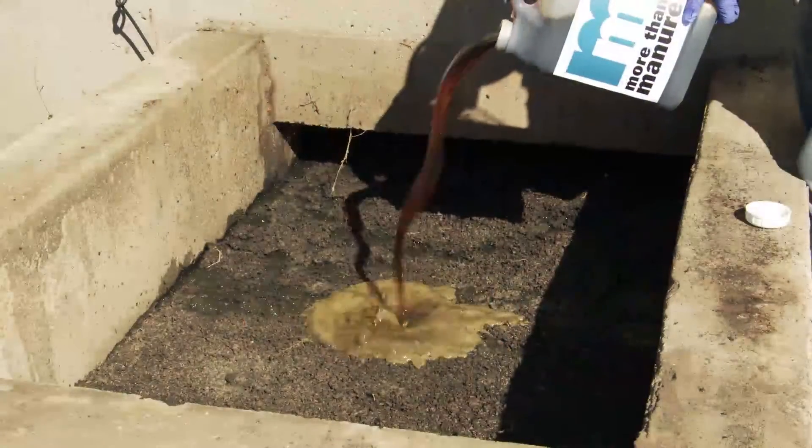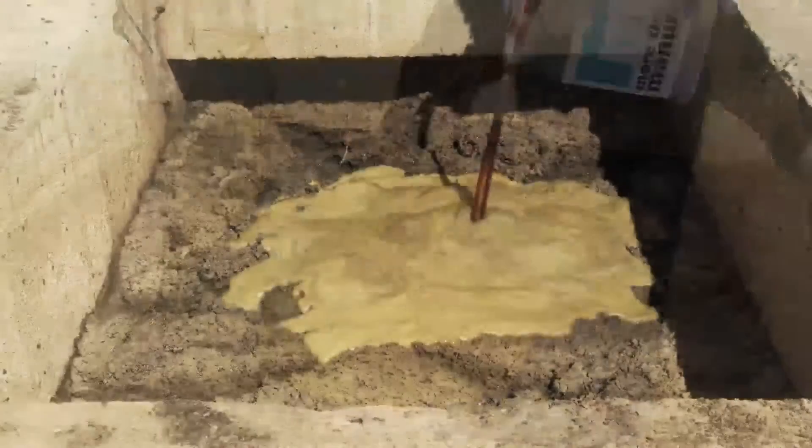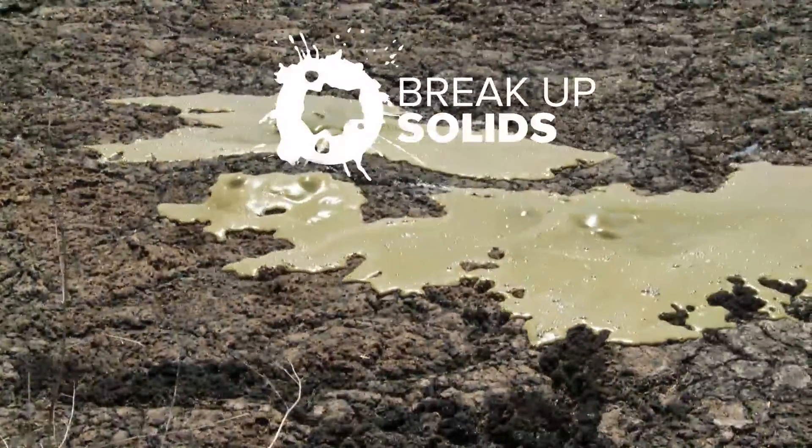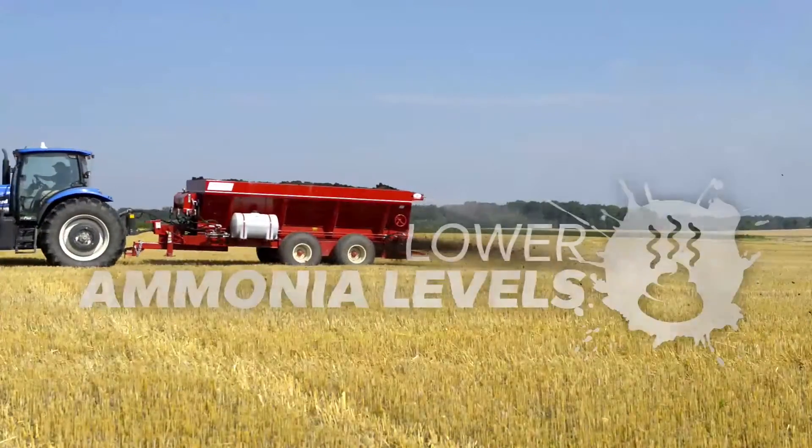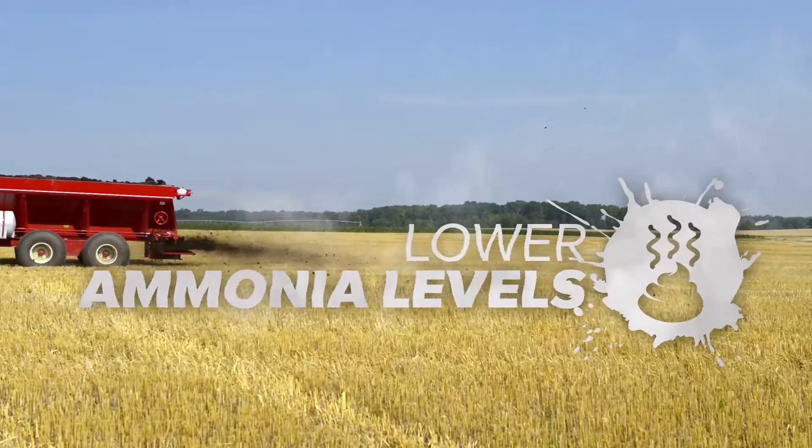MTM goes right to work from the moment you pour it in. It can cut through crusts and break up solids. Adding MTM to your pits, lagoons, or across your fields can lower ammonia levels from your livestock manure by reducing volatility, which keeps nitrogen in its more stable ammonium form longer.